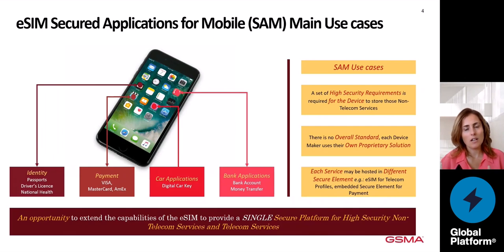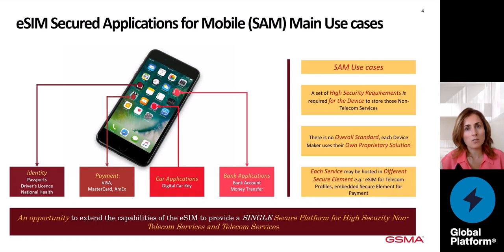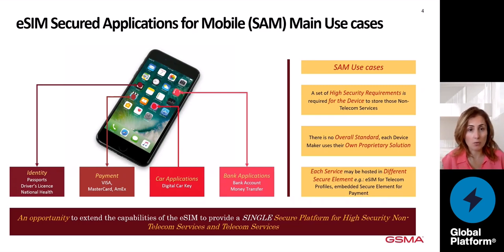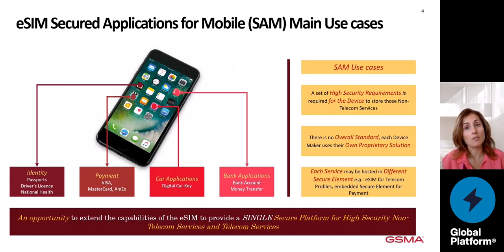Following the explanation of the ISIN, I would like to introduce the main use cases that the SAM technology is trying to cover. Today, I can get a medical appointment directly on my device because I have my national health card already installed on my device. I can go to a shop and pay directly with my phone because I have my credit card already installed on my device. Also, I can open the car with my phone because I have the digital car key installed on my device. And finally, I can make online payments to my friends because I have my bank account already installed in the bank application on my device. All of these new services share something in common, which is the high security requirements needed for the device in order to install those new services.